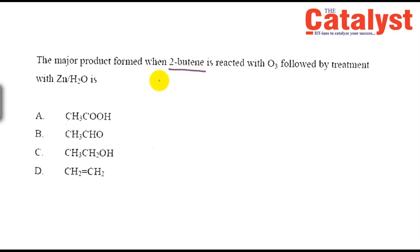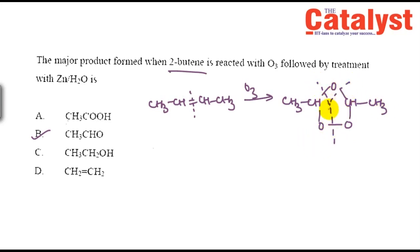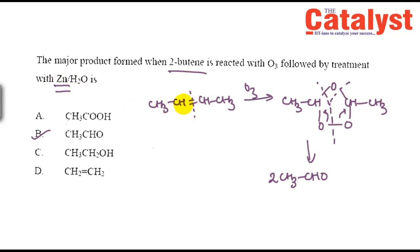The next question is about ozonolysis of butene, a well-known reaction. When an alkene undergoes ozonolysis, it breaks at the double bond to give aldehydes. For 2-butene (CH3-CH=CH-CH3), ozonolysis produces an ozonide intermediate, which on workup with H2O2 gives aldehyde products.